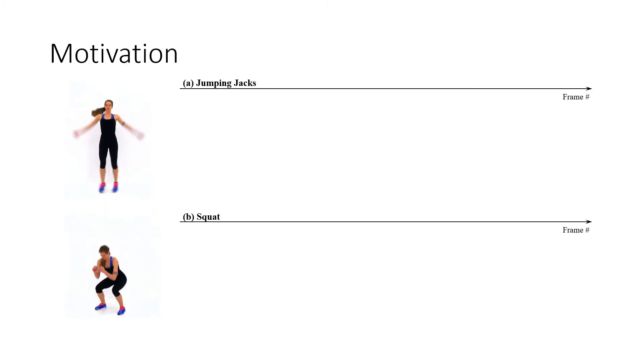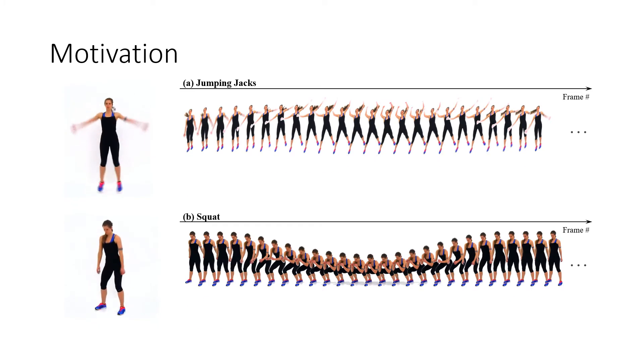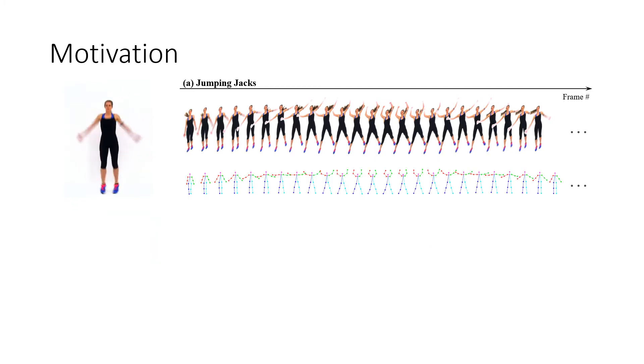Current works in video and human motion analysis either work on the pixel level or the keypoint level. However, there are higher level primitives of motions in these actions. For example, this video of jumping jacks consists of a repeating pattern of two primitive actions: moving hands up and bringing them down.